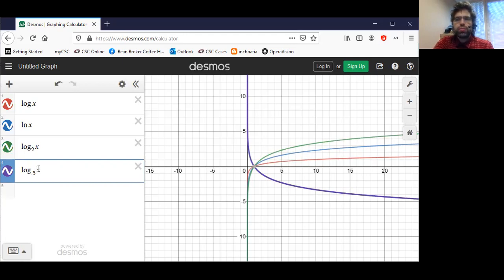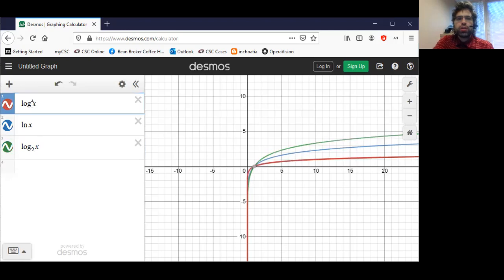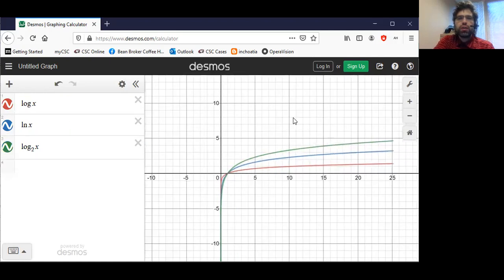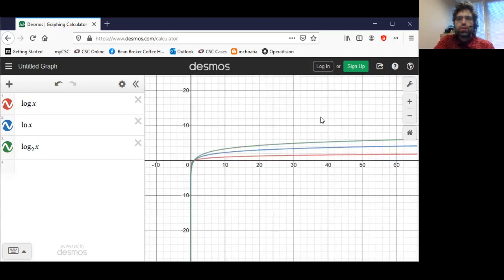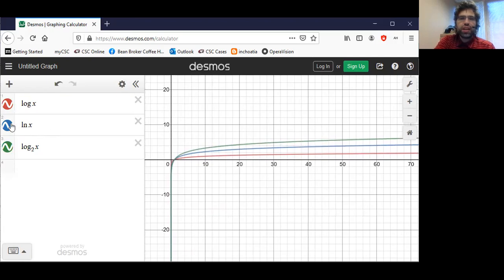However, I don't know any real-world situations where such logarithms are routinely used. The only logarithms I've ever seen used commonly are the common logarithm in the sciences, the natural logarithm in mathematics, and the base two logarithm in computer science. And these all look basically the same.